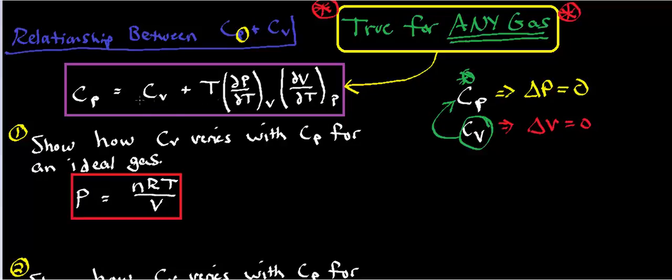It turns out there's an equation — we won't derive it here — where C sub P, the heat capacity at constant pressure, is equal to C sub V plus T times the partial of P with respect to T at constant V, times the partial of V with respect to T at constant P. You evaluate these two partial derivatives, multiply both by the temperature, and add that to Cv to get Cp. To take these partial derivatives, you'll need an equation of state, so if you have one, you can take the appropriate partial derivatives.